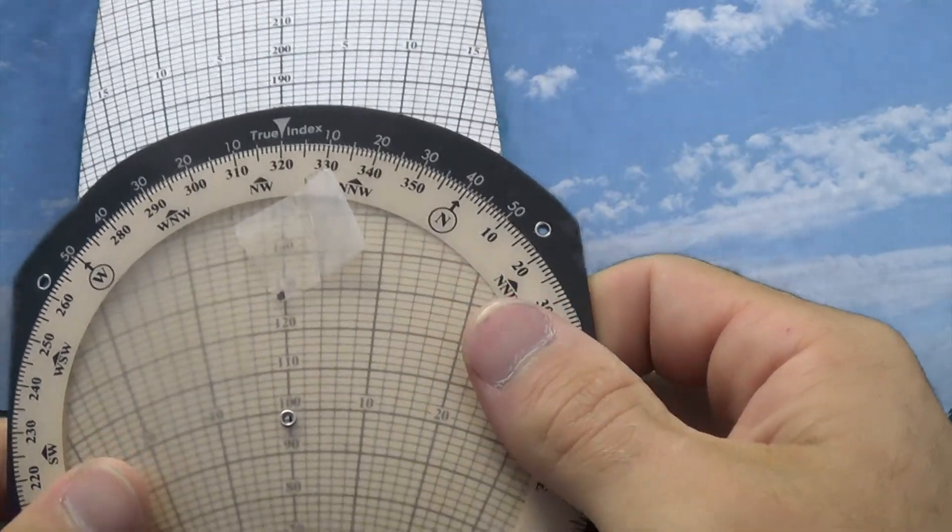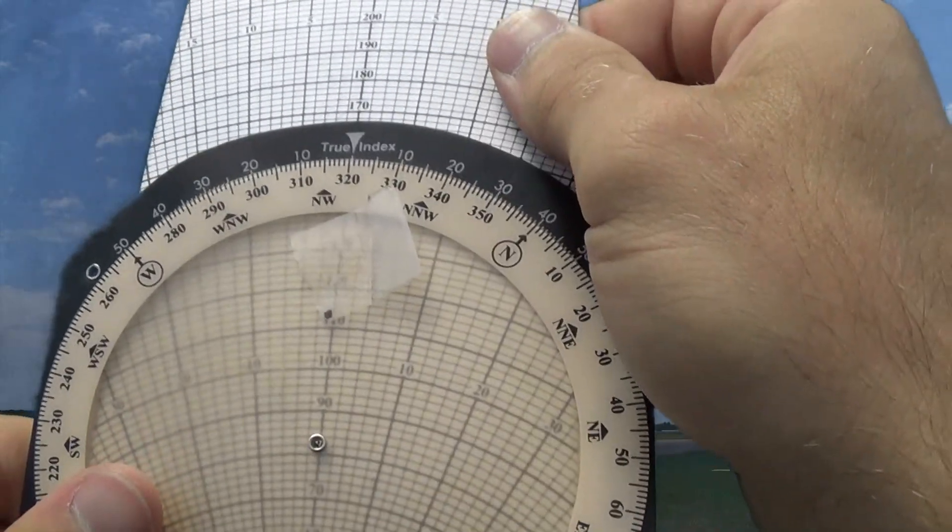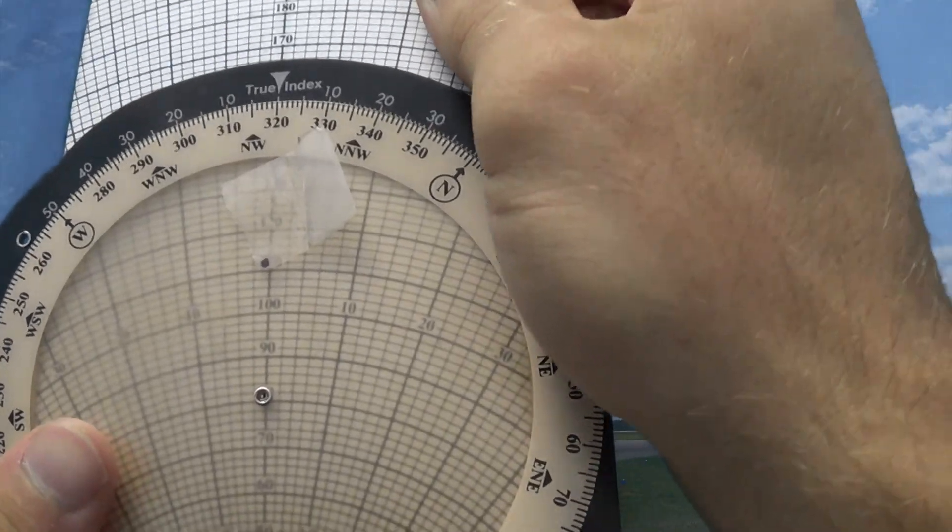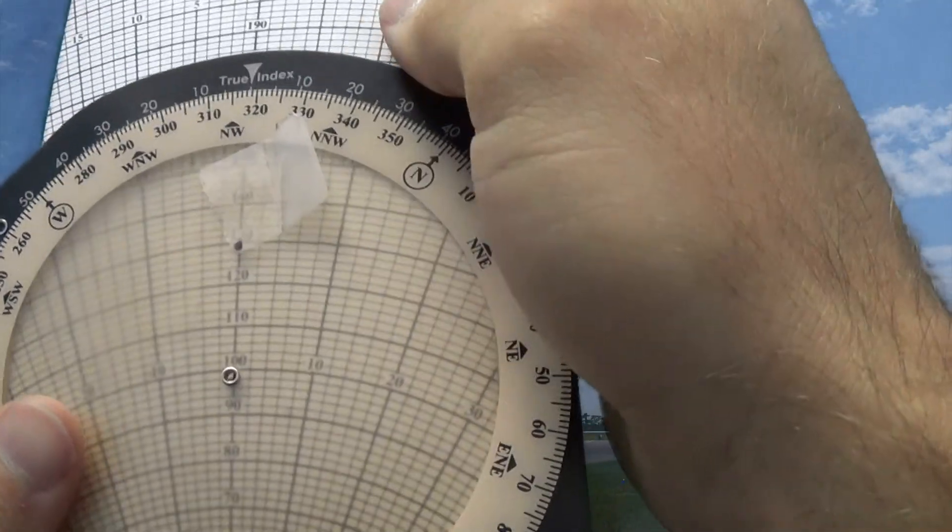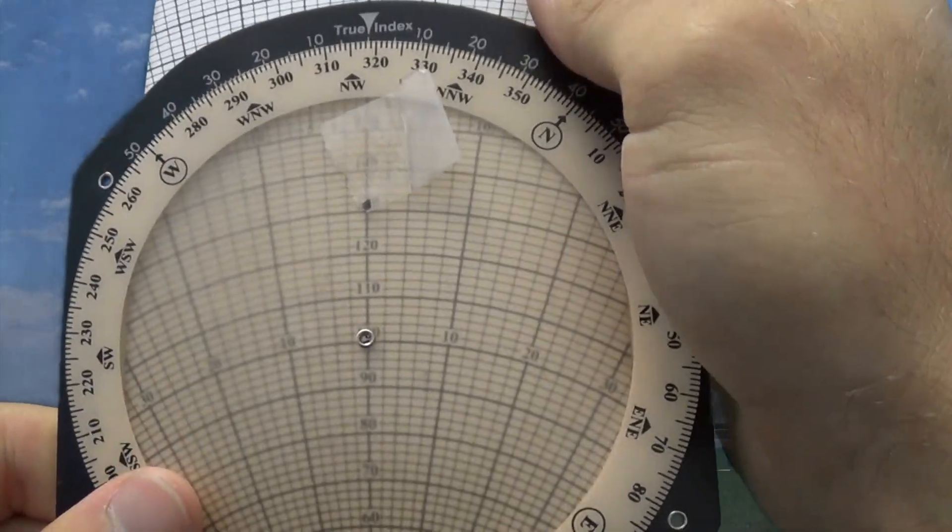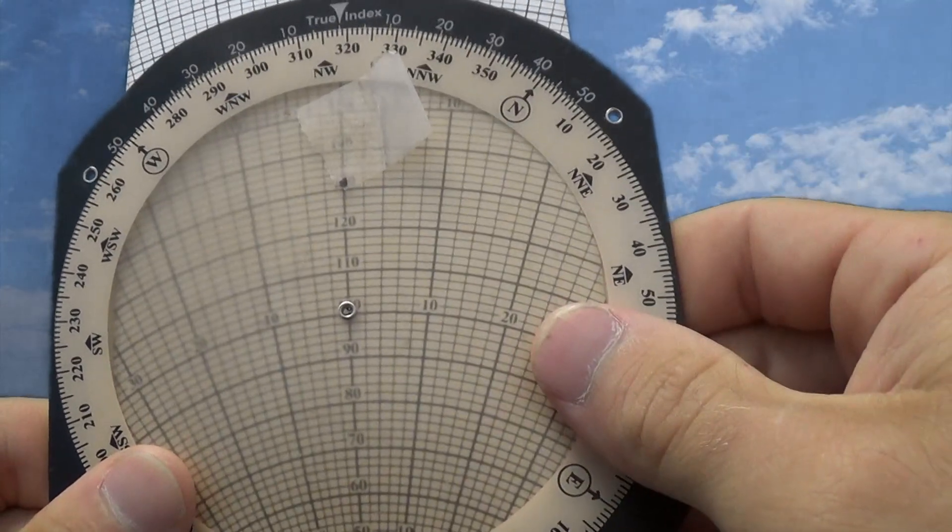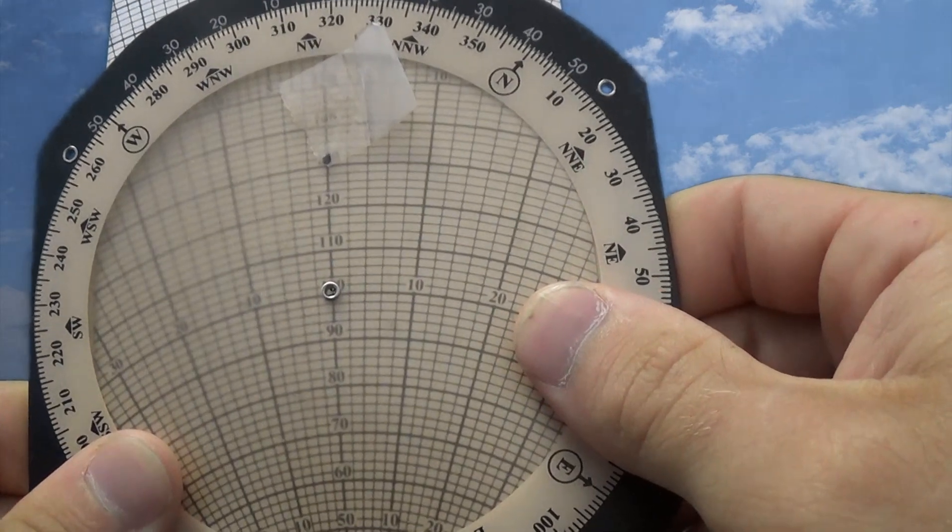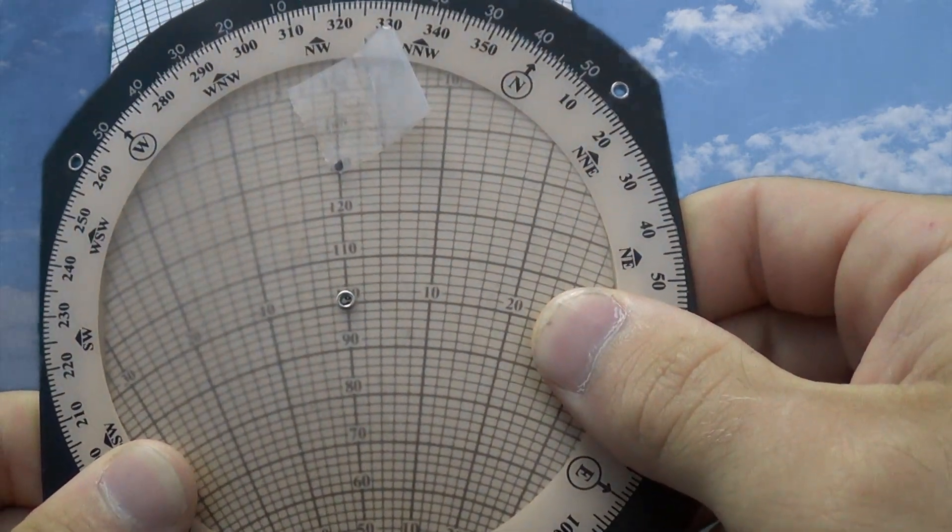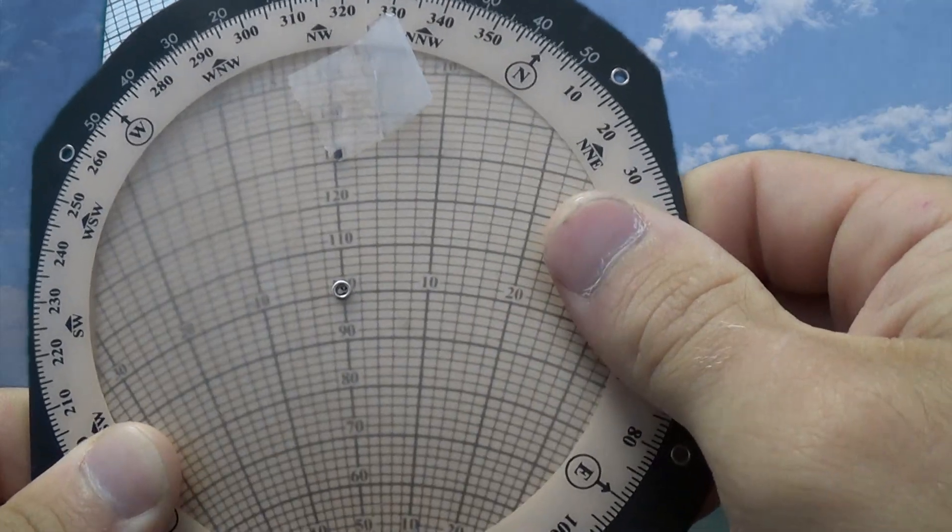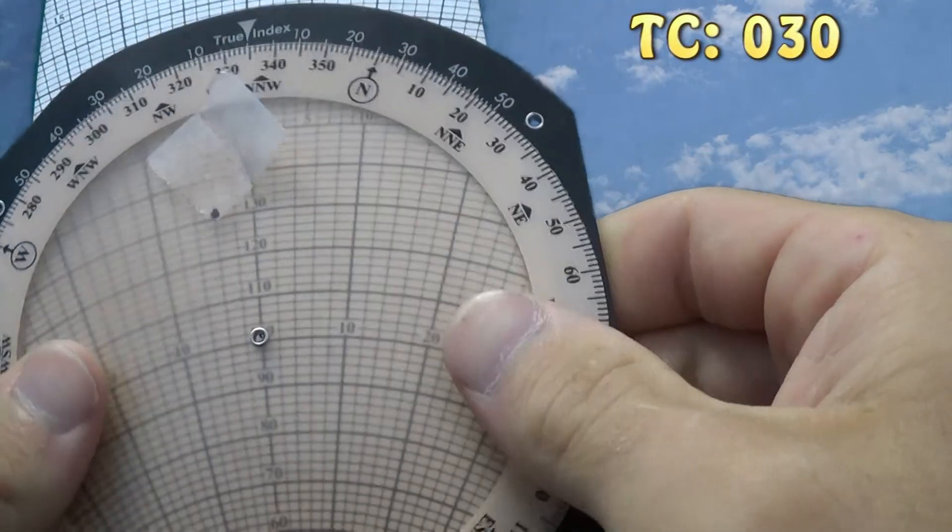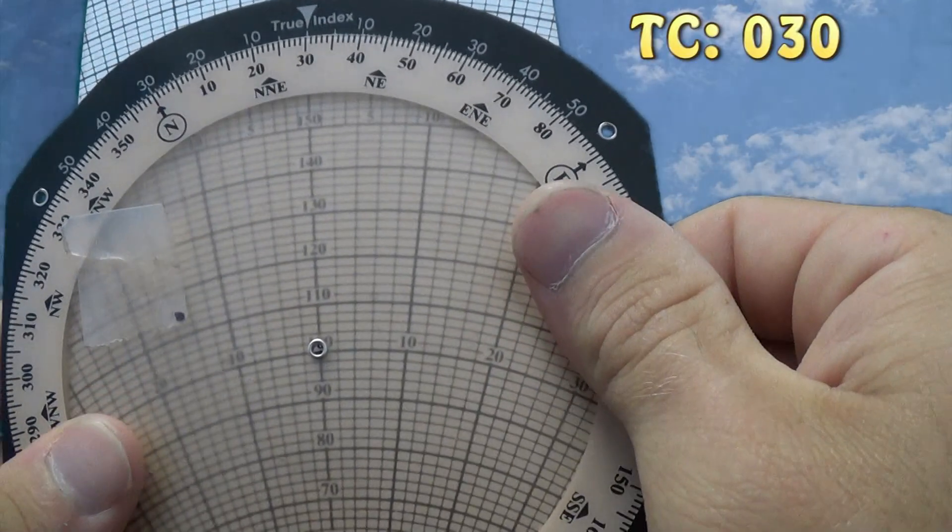Again, we could have started off at 80, and then put a dot at 109. But it's just easier to start off at 100, and then put your dot 29 up from that. Now we're going to twist around to our true course. We find a true course from the sectional chart, from those true lines, and we found our true course to be 030 for our flight today.